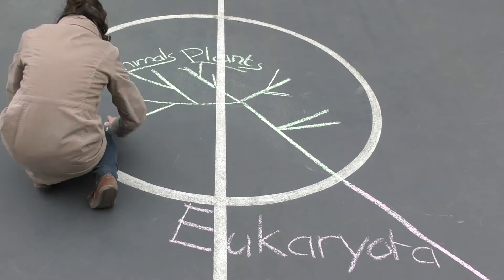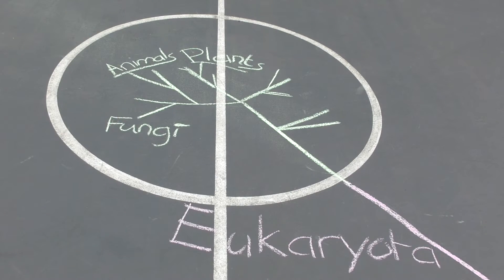There are three groups of eukaryotes that do have multicellular species: the plants, animals, and fungi.